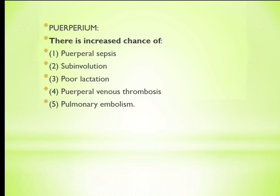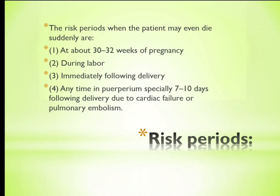Complications in the puerperium include increased chance of puerperal sepsis, uterine subinvolution, poor lactation, puerperal venous thrombosis, and pulmonary embolism. The risk periods when the patient may even die suddenly are: around 30–32 weeks of pregnancy, during labor, and immediately following delivery or any time in the puerperium, especially 7–10 days following delivery due to cardiac failure or pulmonary embolism.